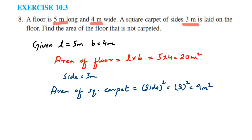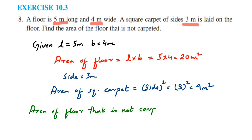Now we have to find out the remaining area where the carpet is not present. Therefore, area of floor that is not carpeted equals area of the floor minus area of the carpet, which is 20 minus 9, equal to 11 meter square. So 11 meter square is the area that is not carpeted.